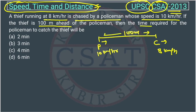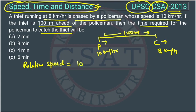We need to find the time required for the policeman to catch the thief. In this kind of question, we use the concept of relative speed. Since both are going in the same direction, the relative speed is the difference of their speeds: 10 minus 8, which equals 2 km per hour.